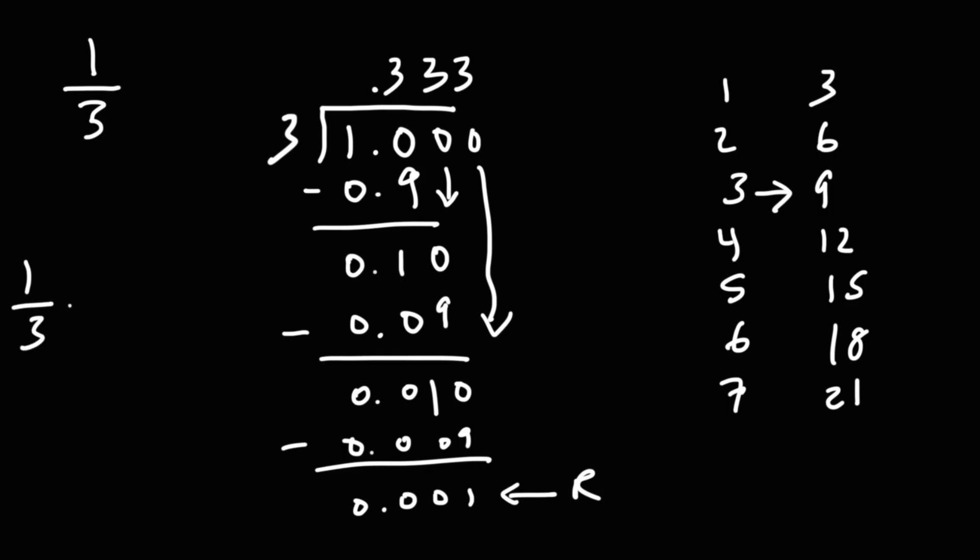So 1 over 3, that is equal to 0.3333. This is going to go on forever. So we could simply say 1 over 3 is equal to 0.3 repeating, and we're going to put a bar on top of the 3. It just shows that it's going to keep repeating forever. So that's how you can convert a fraction to a repeating decimal for this example.